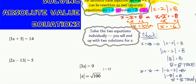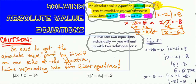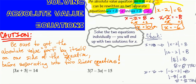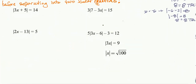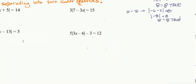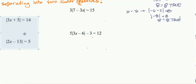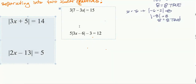You want to be sure to get the absolute value part of the equation by itself on one side of the equal sign before you try to separate it out like we just did. Let's look at some examples. The first one is 3 times absolute value of 3x plus 5 is equal to 14.